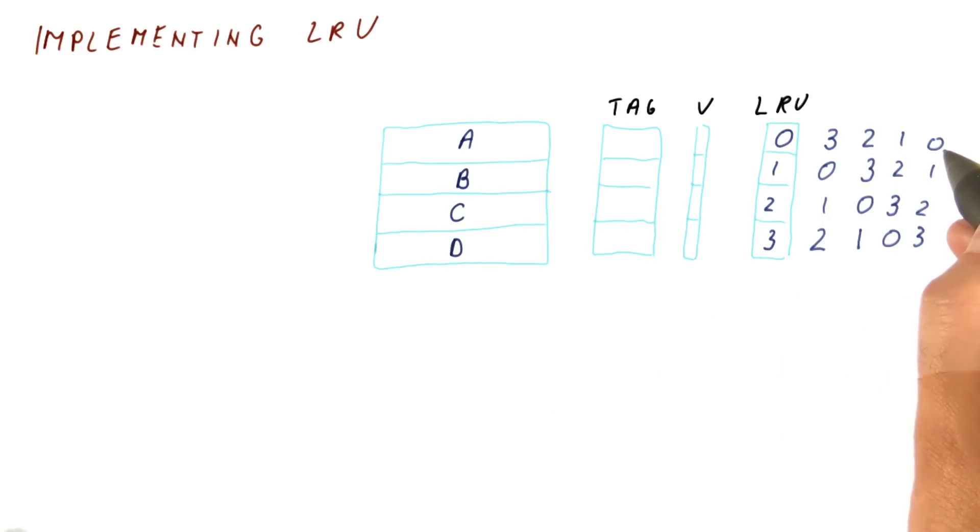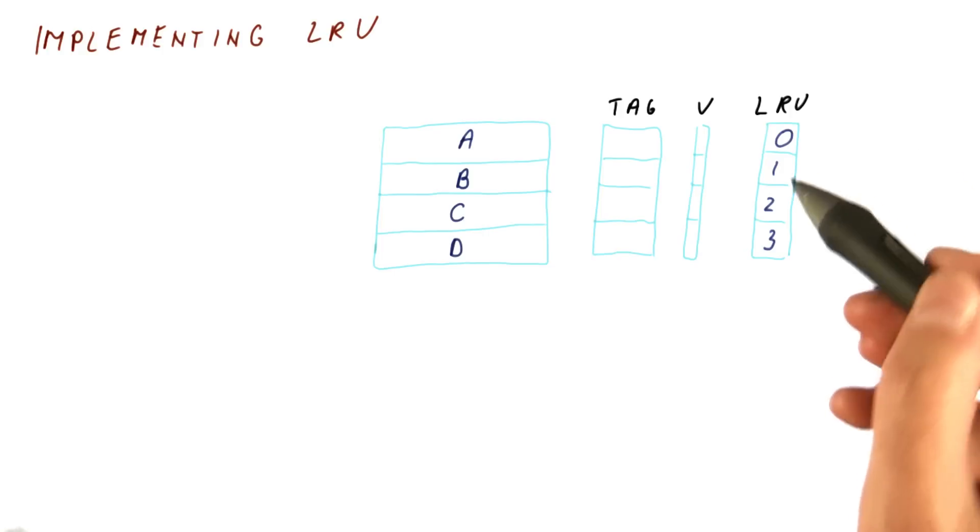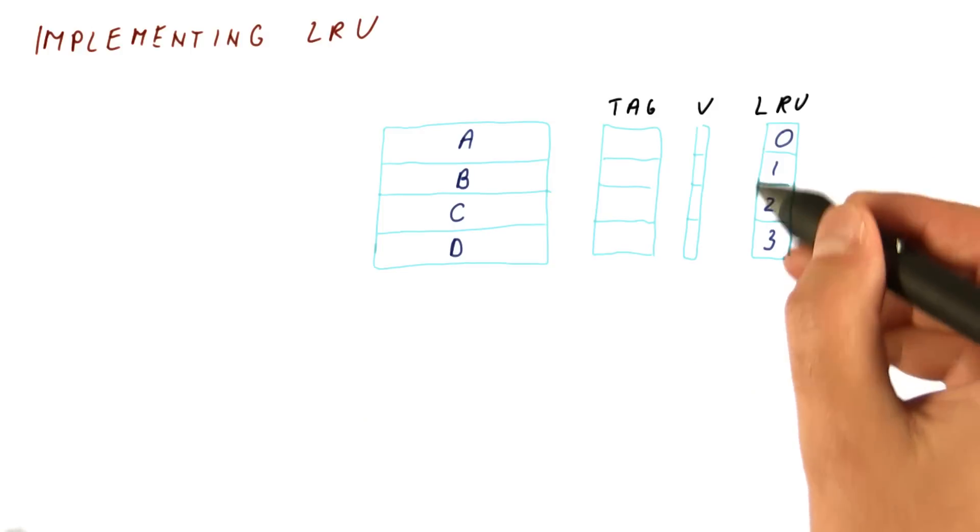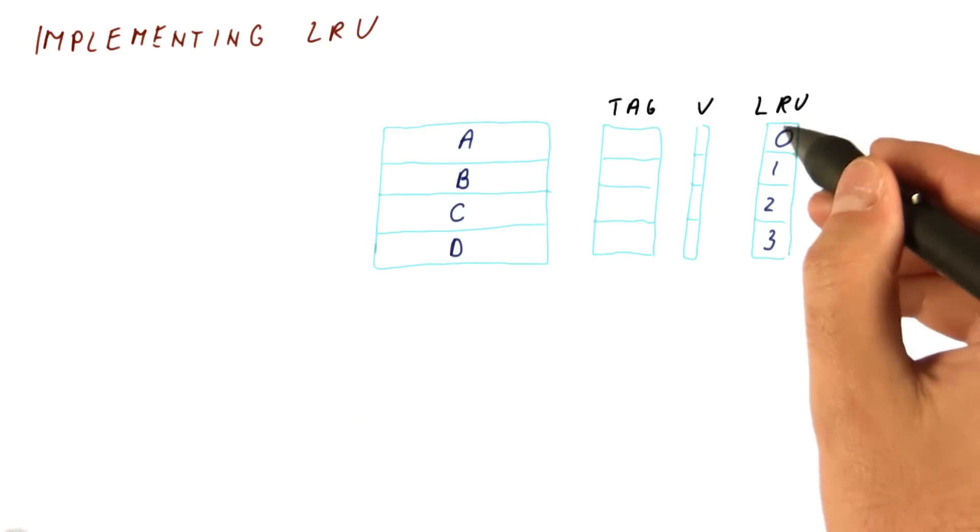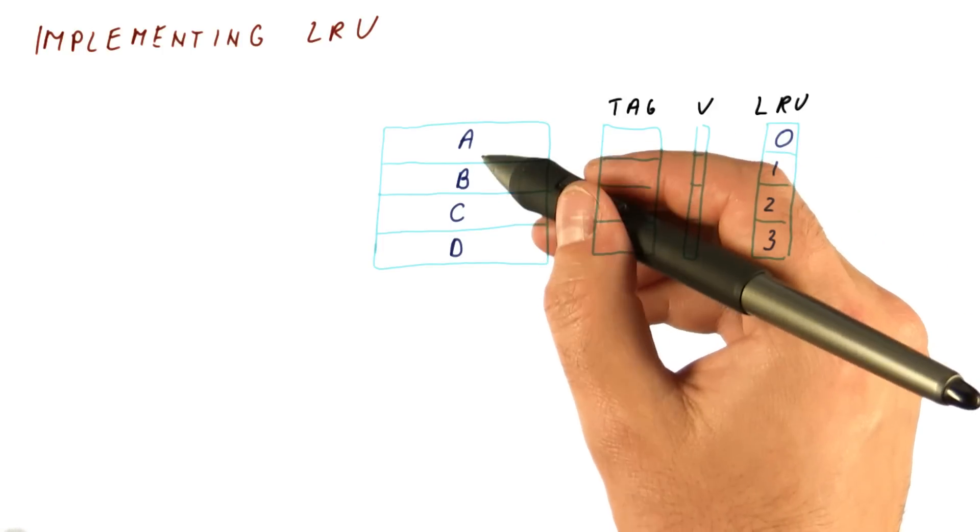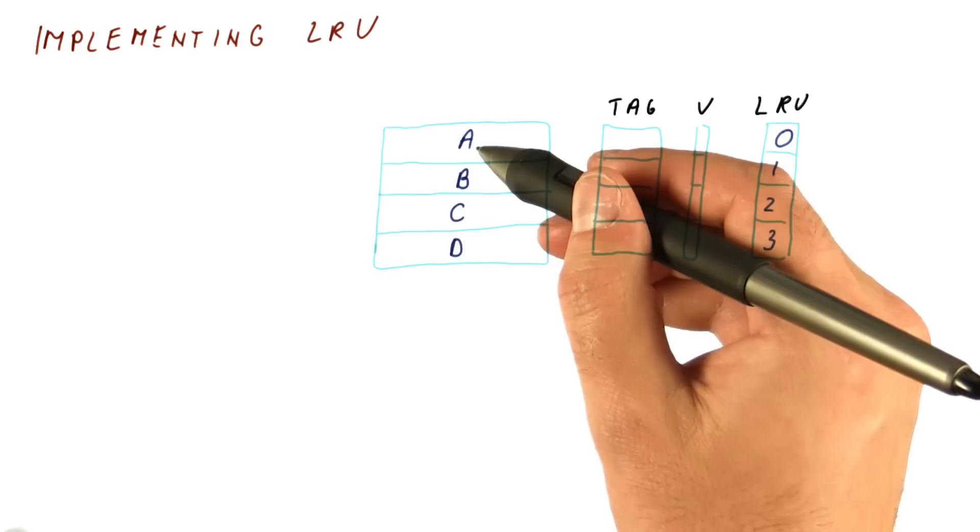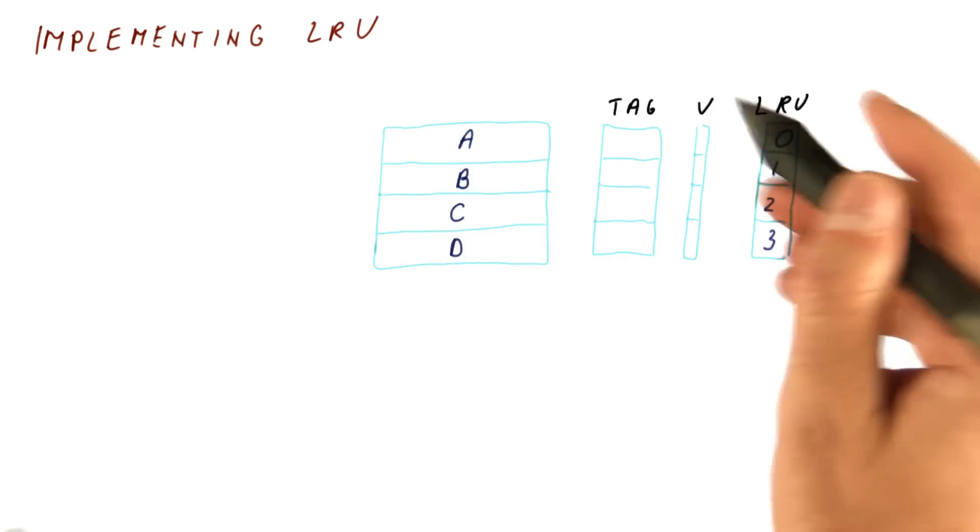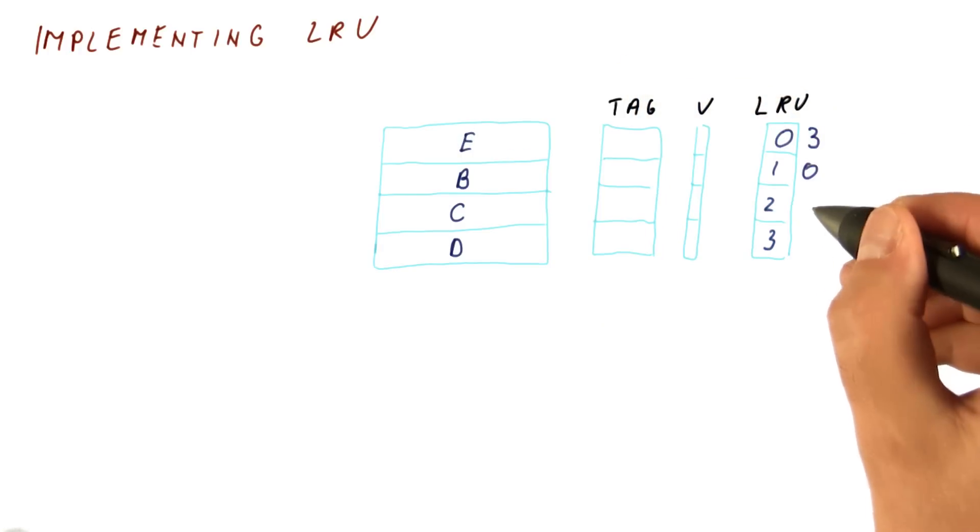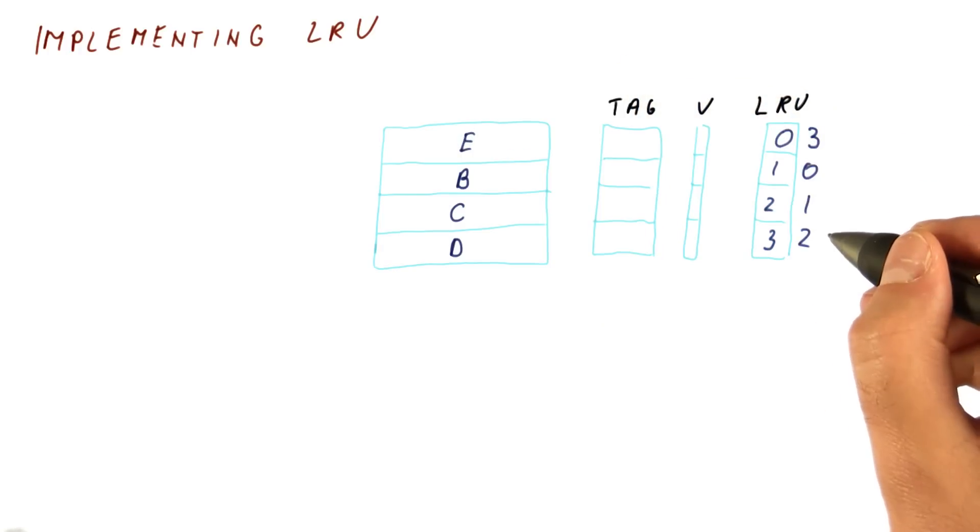So I'm going to clean up here. And now, if we access E, we're going to find what was the least recently used block. And A at this point is because it's been accessed the least recently. So A will be replaced by E. And the LRU counter here becomes 3, which brings these one notch lower.